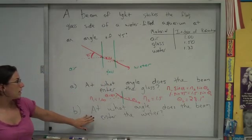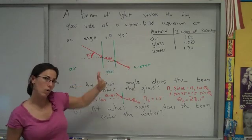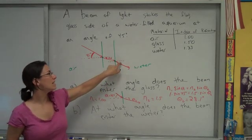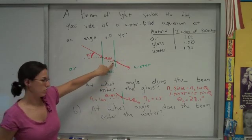For part B, now I want to know when light goes from the glass to the water, what's the angle in the water? In other words, what's the refracted angle for the second boundary? This boundary right here. So let me just draw this second boundary now.